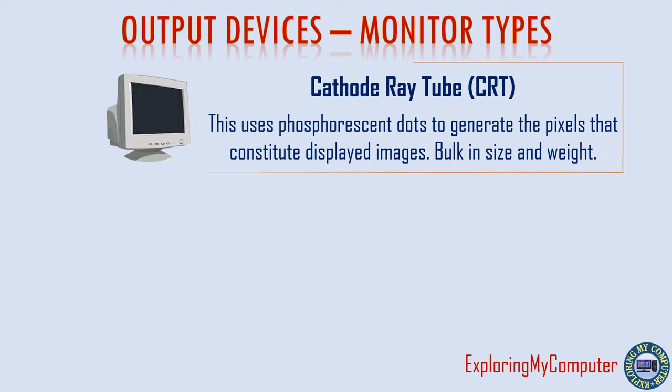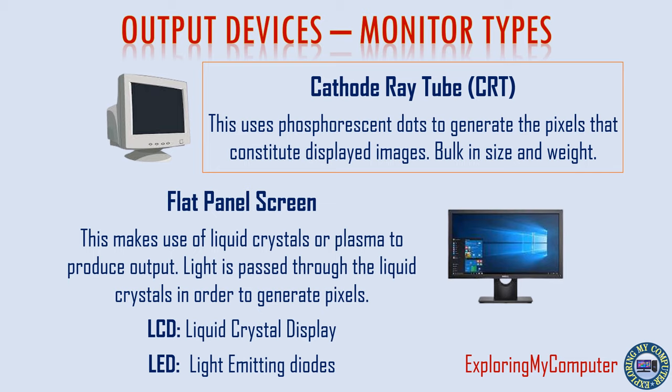CRT, or Cathode Ray Tube, uses phosphorescent dots to generate the pixels that constitute displayed images; it is bulk in size and weight. Flat panel screens make use of liquid crystals or plasma to produce output; light is passed through the liquid crystals to generate pixels. Types include LCD (Liquid Crystal Display) and LED (Light Emitting Diodes).